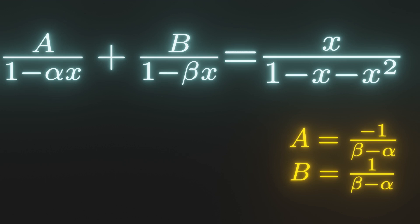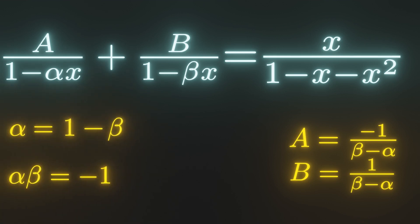Now, we have to solve for alpha and beta. We use the first equation to solve for alpha in terms of beta. Alpha equals 1 minus beta. And then we can substitute that into the second equation.